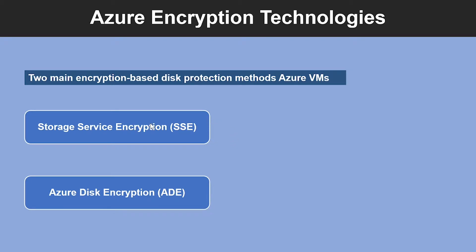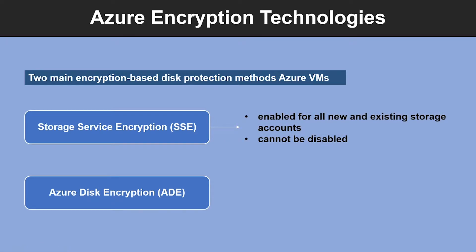Let's understand Storage Service Encryption in detail. Azure Storage Service Encryption is an encryption service built into Azure used to protect data at rest. The Azure Storage Platform automatically encrypts data before it's stored to several storage services, including Azure Managed Disk. Storage Service Encryption is enabled for all new and existing storage accounts and cannot be disabled. Your data is secured by default and you don't need to modify your code or application to take advantage of SSE, and it does not affect the performance of your Azure Storage Services.